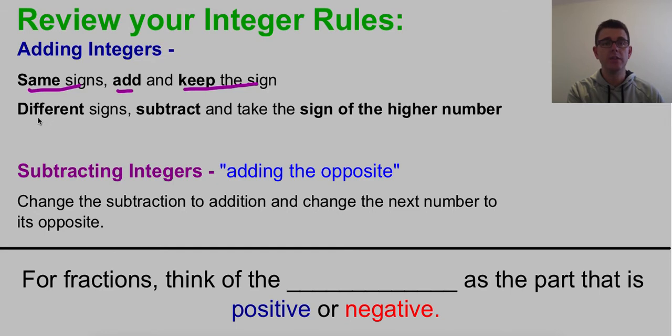If the integers have different signs, so one's positive and one's negative, we're going to subtract them and take the sign of the higher number. Which team wins, the positives or the negatives?